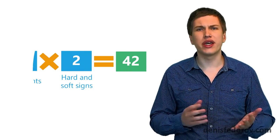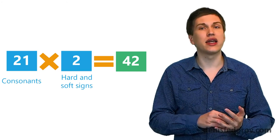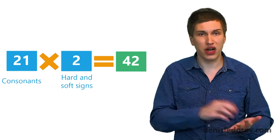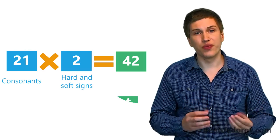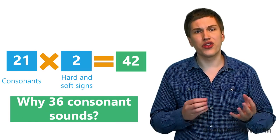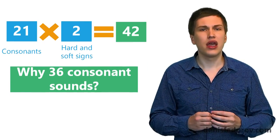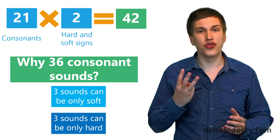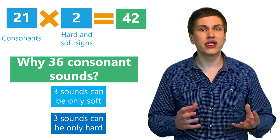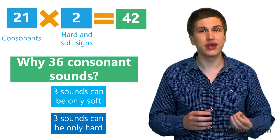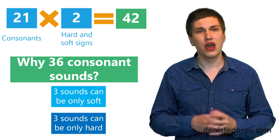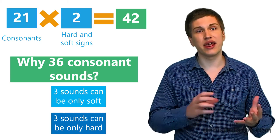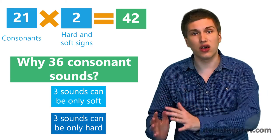And when we add a soft sign, they become soft. But the most attentive watchers would ask me, if it is so, why do we take 21 consonants and multiply by 2 because of hard and soft signs, we get 42. Why are there only 36 sounds? It's because 3 letters can be only soft and 3 letters only hard. That's why we get 36 consonant sounds.